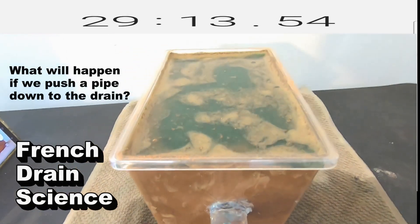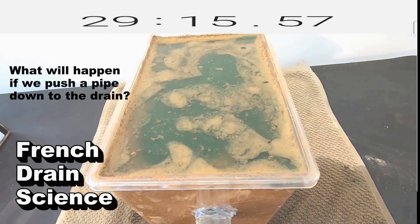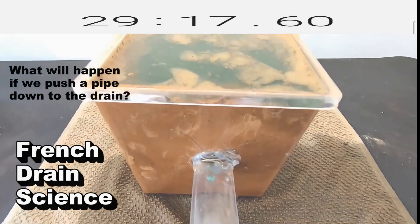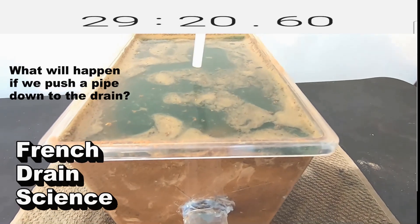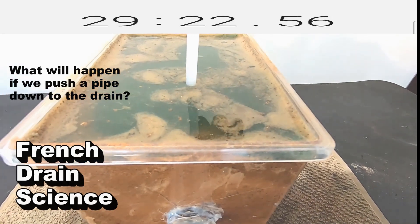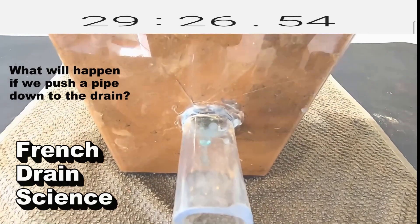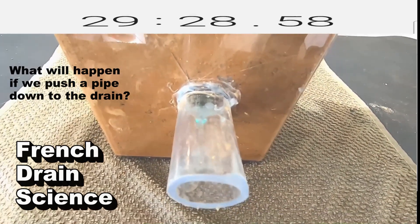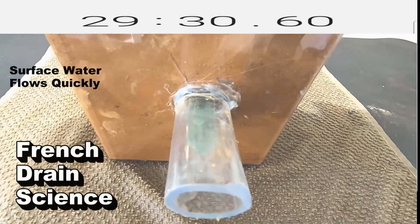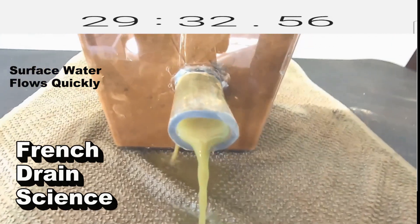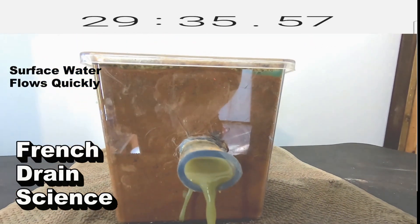What happens if we push a piece of pipe down to the drain? In other words, say we added a catch basin. Can you see all that water just sitting on the surface? This is clay soil. So if we push the pipe down to the French drain and scraped off that fabric, watch what happens.